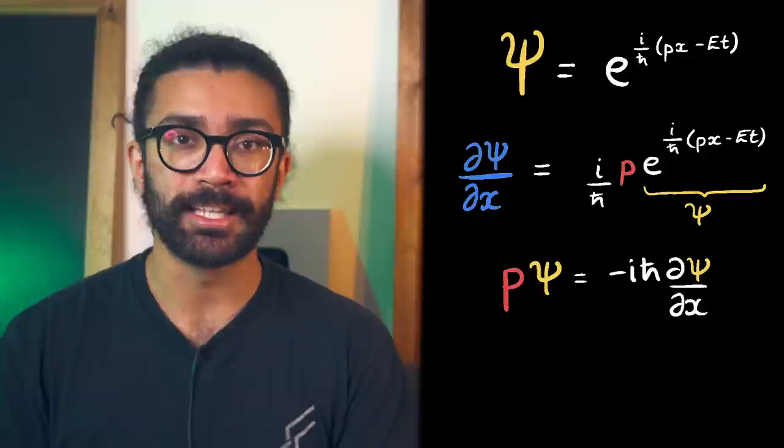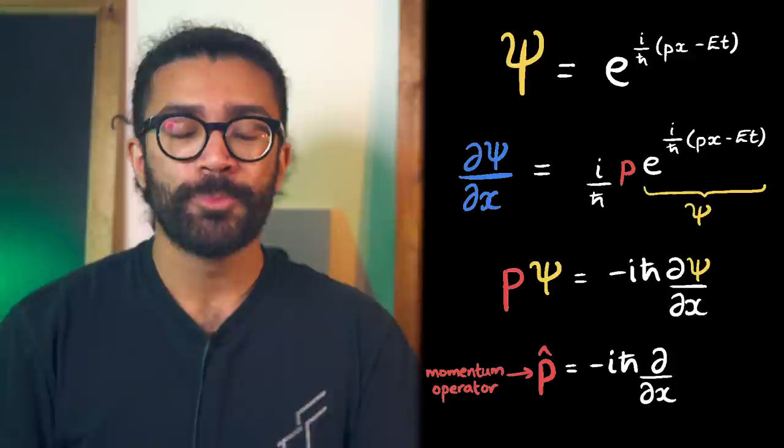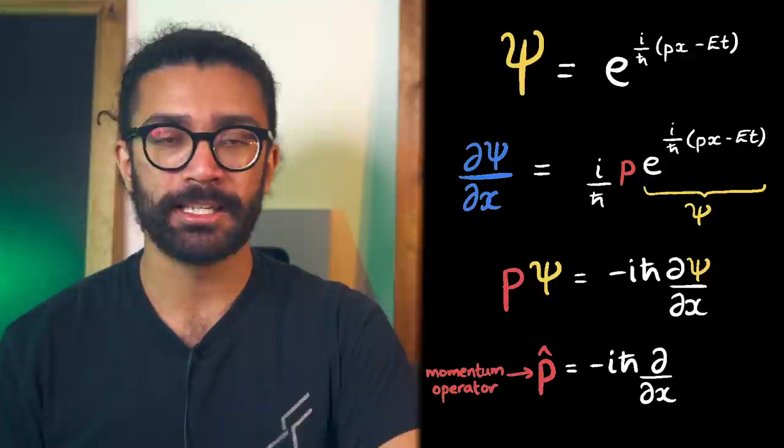This is where our mathematical formulation of momentum comes from in the world of quantum mechanics. But what we're seeing here is that momentum in quantum mechanics is a little bit more complicated than we're used to. It's not as simple as calculating the velocity of our object and then multiplying it by its mass like we do in classical physics.